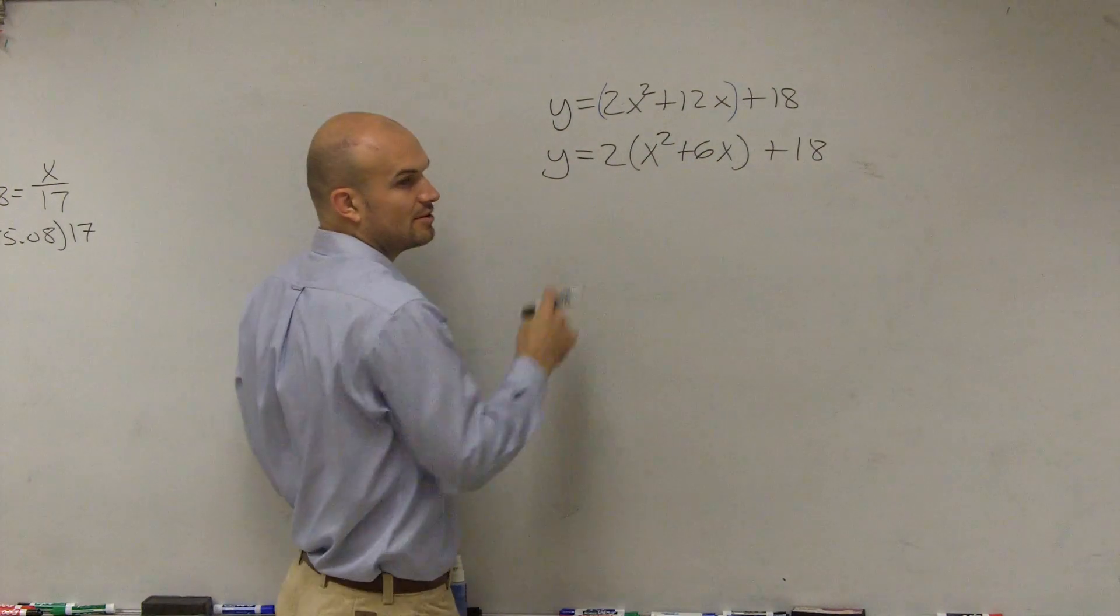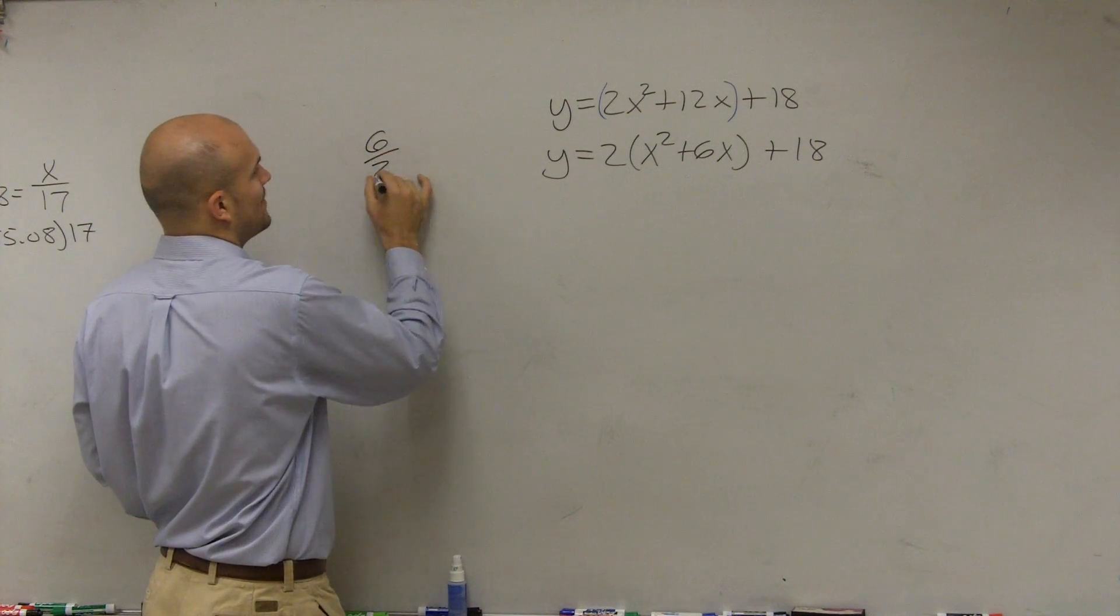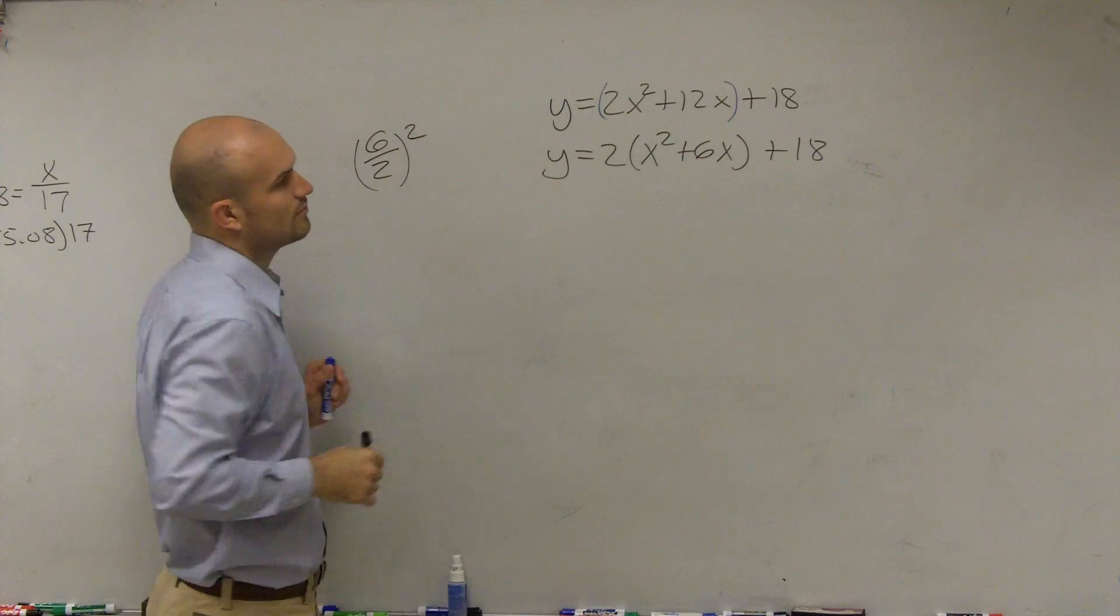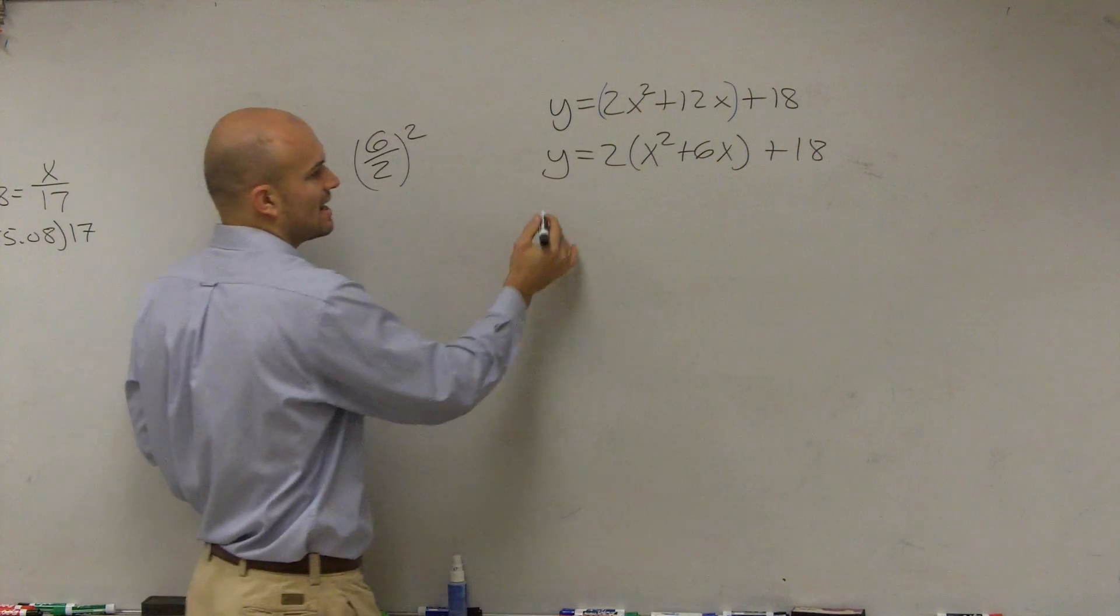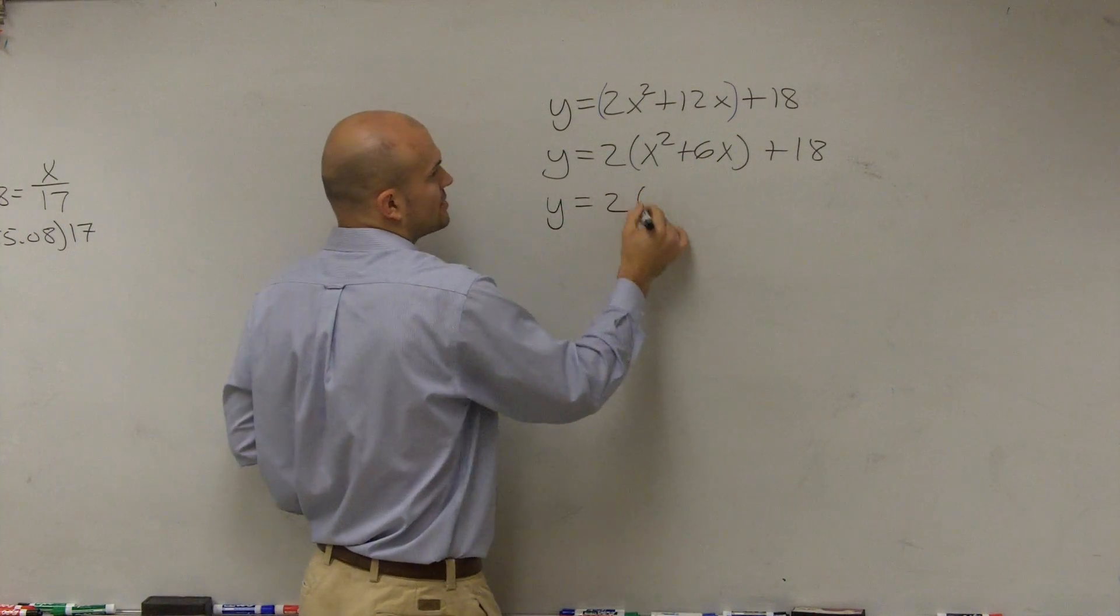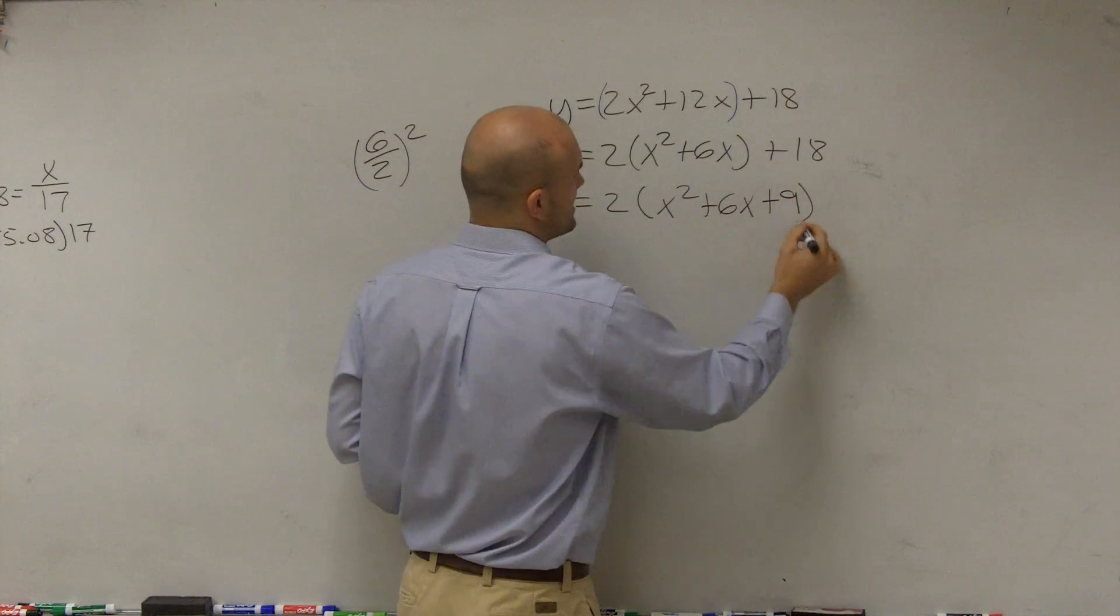So now what I can do to determine the perfect square is I'm going to take 6 divided by 2 and square it, where 6 is my b. So 6 divided by 2 is 3, 3 squared is 9. So I write y equals 2 times x squared plus 6x plus 9.